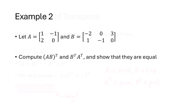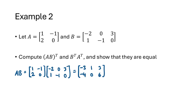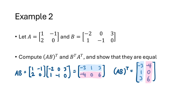Let's see this in action. With A = [1, −1; 2, 0] and B = [−2, 0, 3; 1, −1, 0], let's compute (AB)ᵀ and BᵀAᵀ and show that they're equal. First we compute AB, then to form (AB)ᵀ we take the rows of AB and turn those into the columns of (AB)ᵀ.